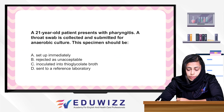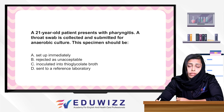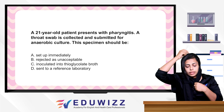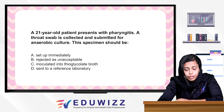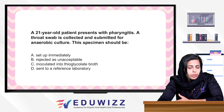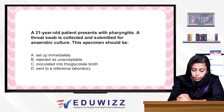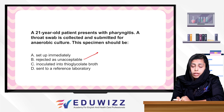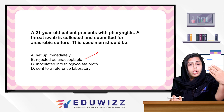Next question: A 21-year-old patient presents with pharyngitis. A throat swab is collected and submitted for anaerobic culture. The options are: set up immediately, reject as unacceptable, inoculate into thioglycolate broth, or send to a reference laboratory. Throat swab should be rejected as unacceptable, because throat swabs are not appropriate specimens for anaerobic culture.